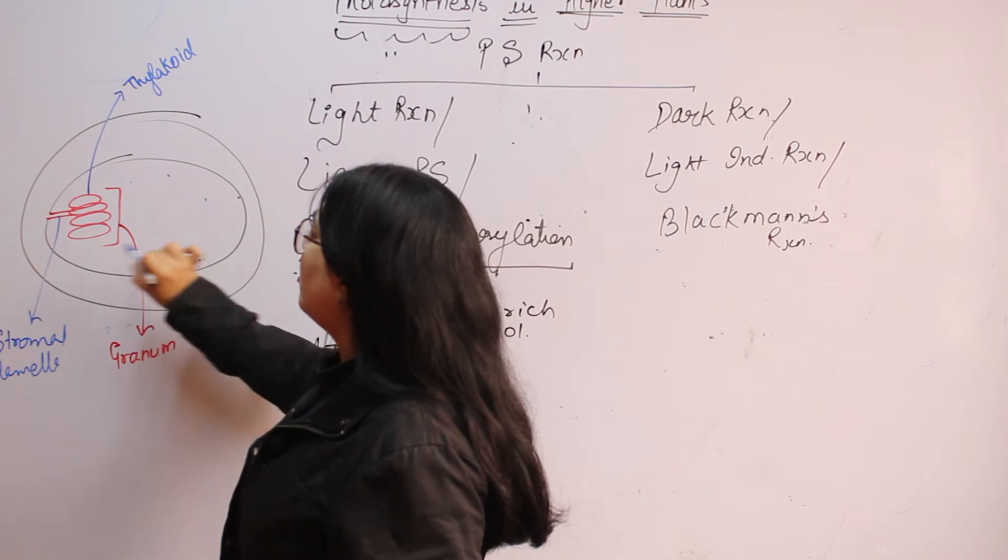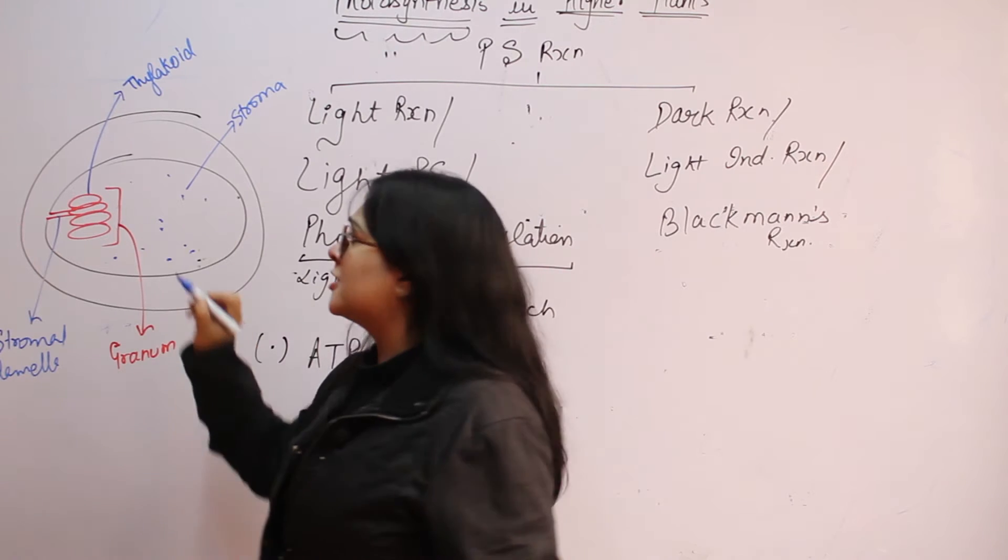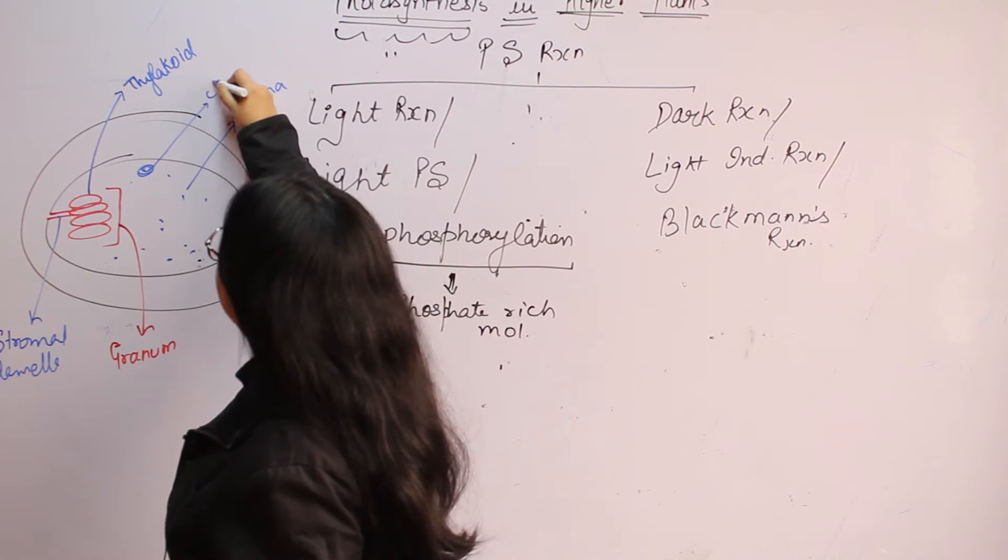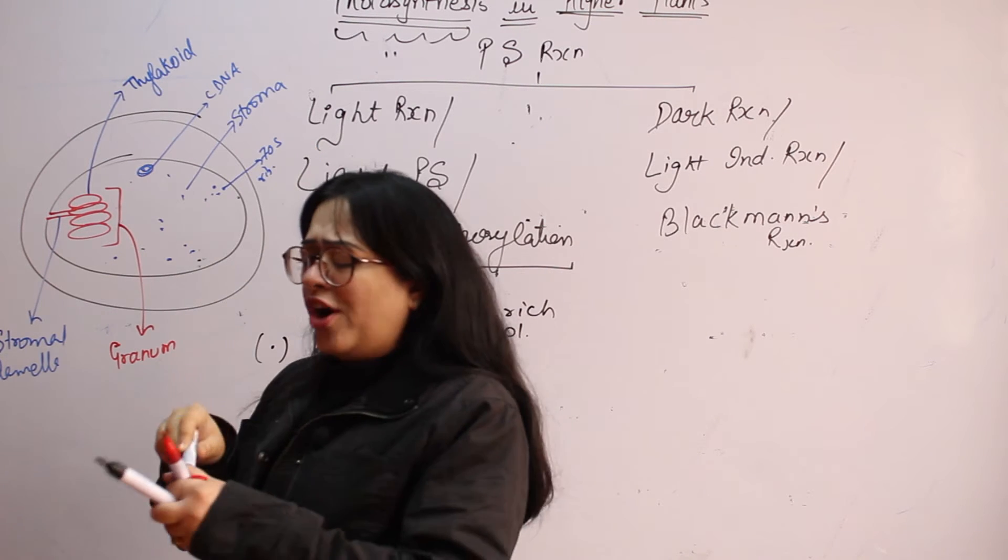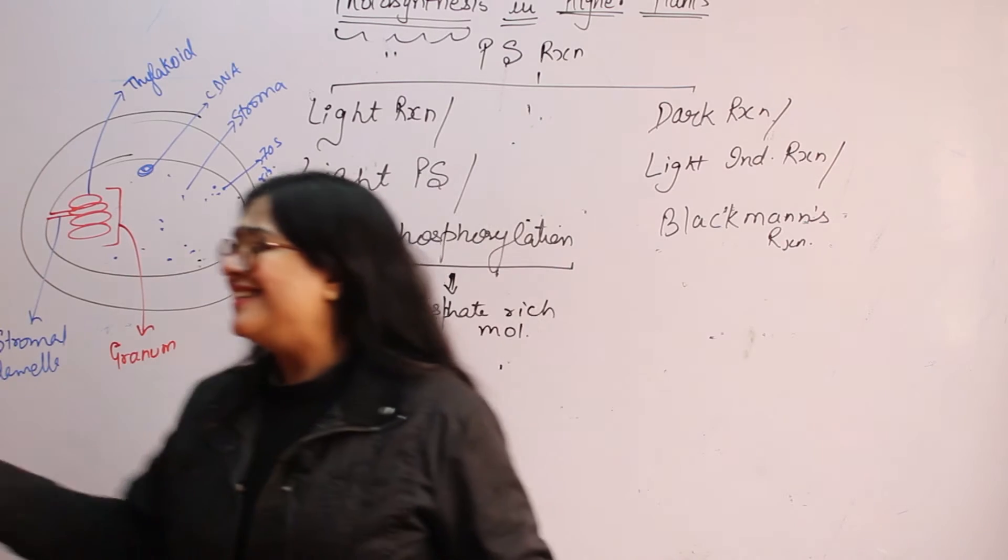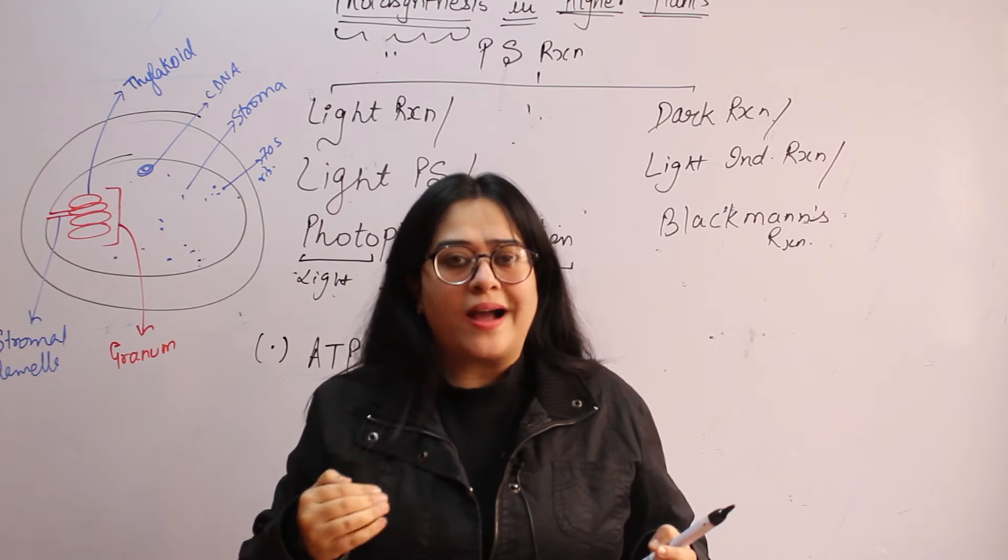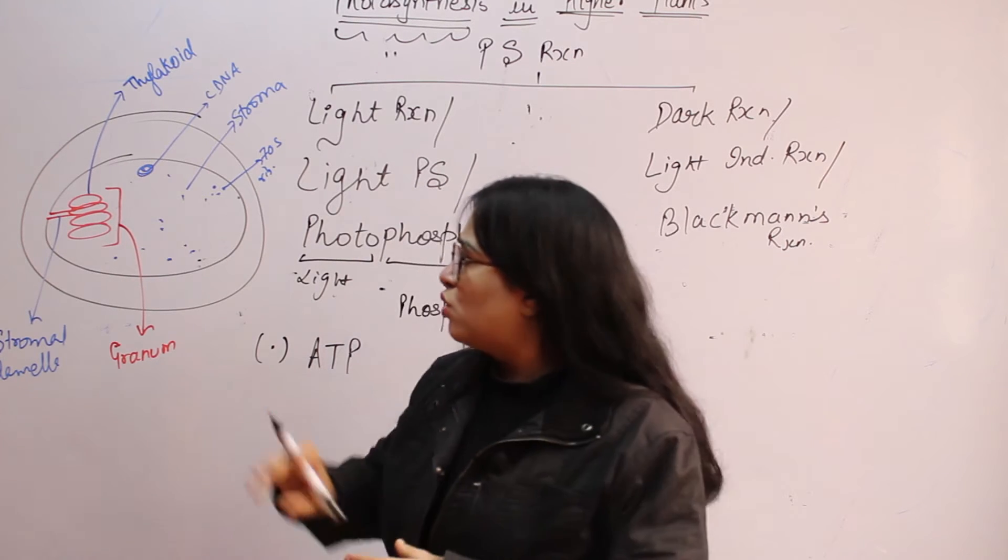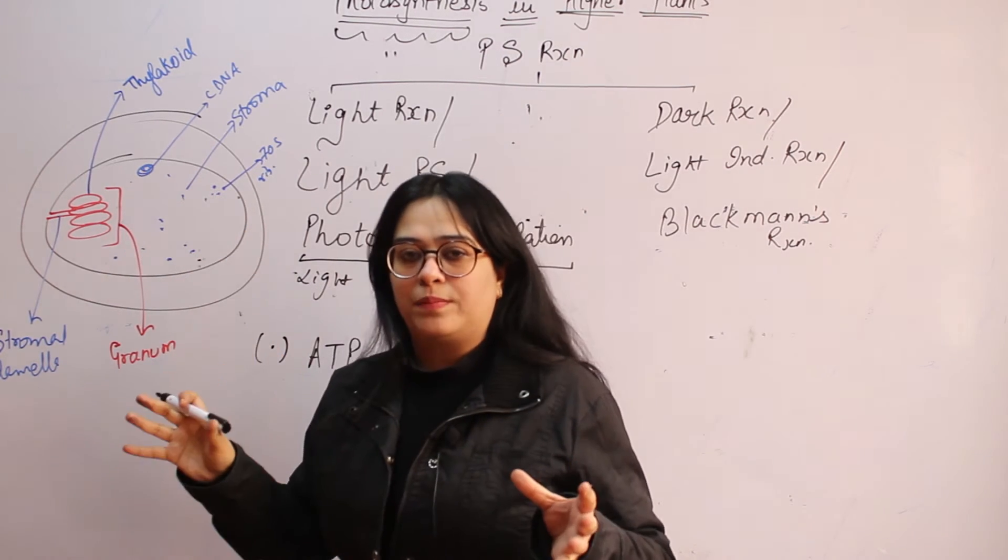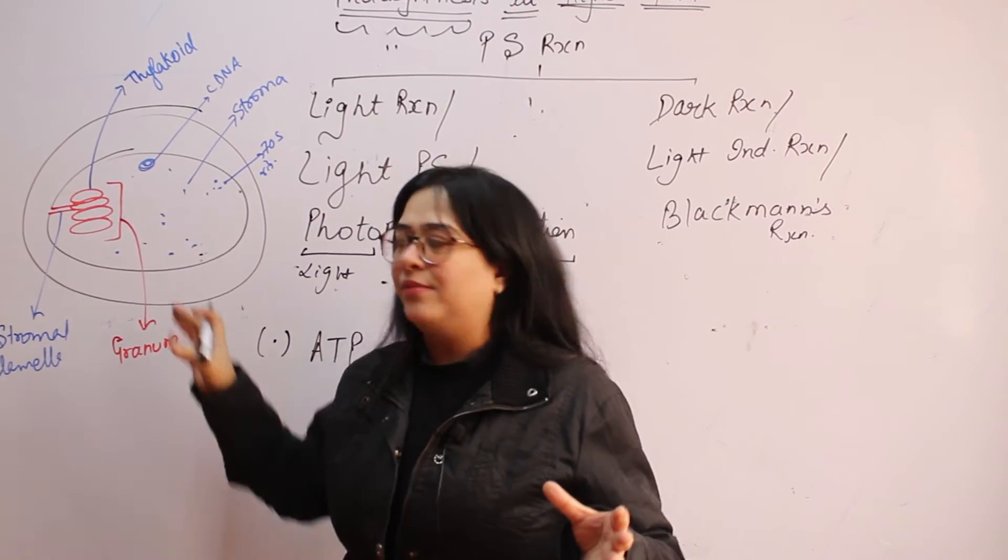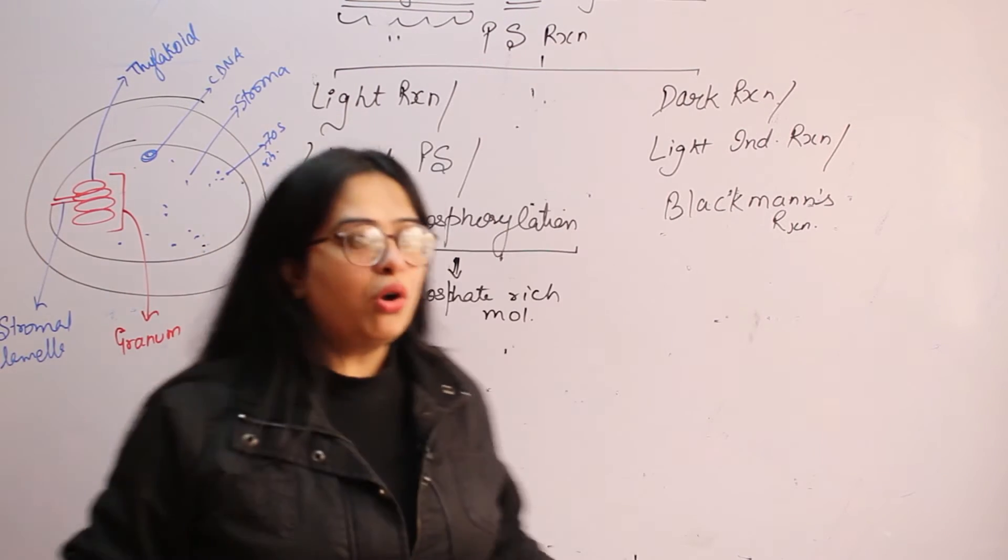Because matrix of chloroplast is known as stroma. This matrix has its own circular DNA, its own 70S ribosomes. For what? Basically why is this having its own DNA? Because there is a continuous need of enzymes which will be required in photosynthetic reaction. So for the production of those enzymes, this cDNA, circular DNA, along with these 70S ribosomes are going to help. So there are genes present for those particular enzymes in this cDNA. And for the process of translation, this chloroplast has 70S ribosomes.